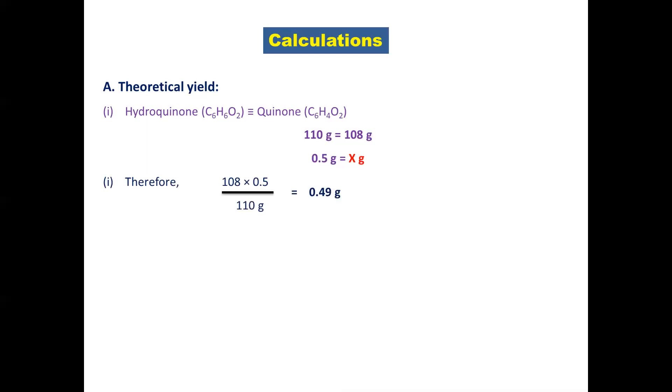By cross product we get 108 multiplied by 0.5 upon 110 gram equals 0.49 gram.